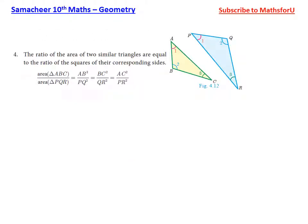The area of two similar triangles is equal to the ratio of the squares of the corresponding sides. So the area of triangle ABC divided by the area of triangle PQR equals AB²/PQ² equals BC²/QR² equals AC²/PR².